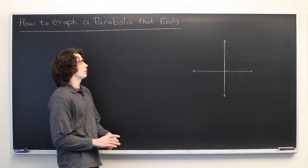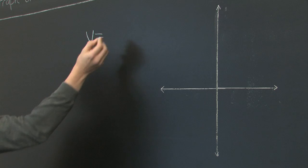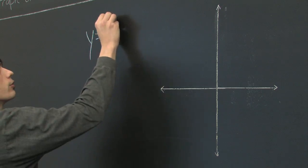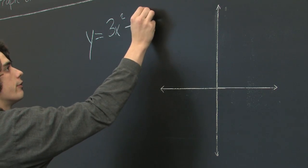Now typically when you're graphing a parabola, for example, let's say we're given y equals 3x squared minus 5.